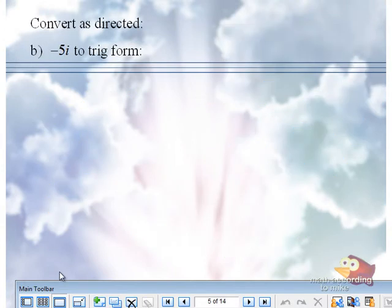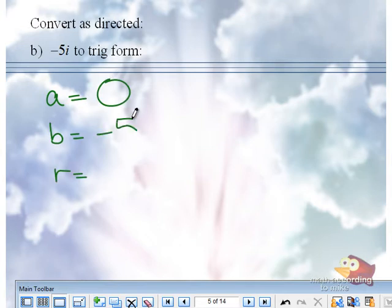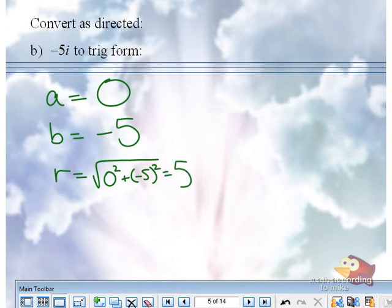Negative 5i converts to trig form. We need an A, a B, an R, and a theta. Careful. So, R would be the square root of 0 squared plus negative 5 squared. Okay, we're going to move a little bit faster.